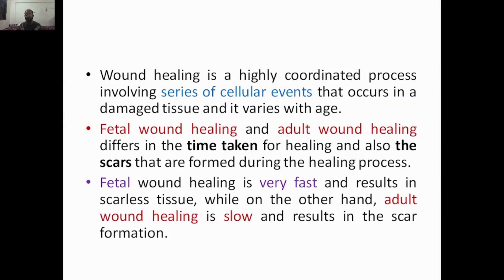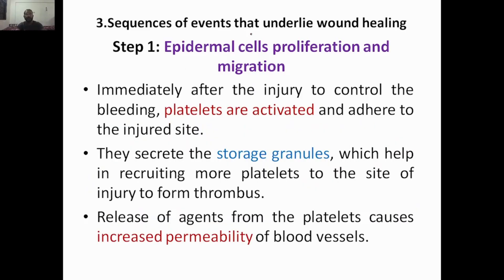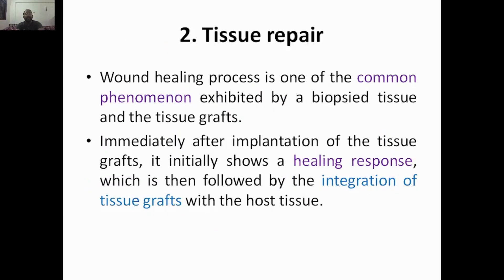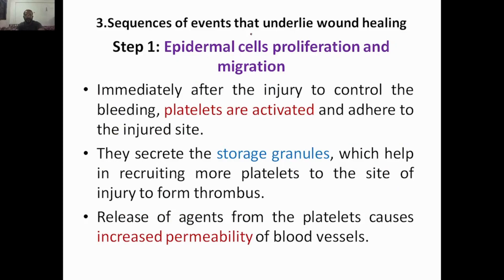Fetal wound healing and adult wound healing are two different types. They differ in the time taken for healing and the scars formed during the process. Fetal wound healing is quicker and results in scarless tissue, whereas adult wound healing is slow and results in scar formation. That was the introduction to tissue repair. In the next class we will discuss the sequence of events that underlie wound healing, which involves four different steps.